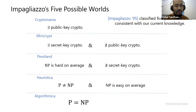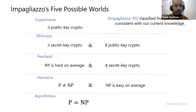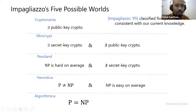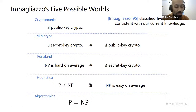There's a survey by Impagliazzo describing five possible worlds of complexity and cryptography, ranging from Algorithmica (where P equals NP) to Cryptomania (where there's public key cryptography). There are intermediate worlds: Heuristica (where P ≠ NP but NP is easy on average), Pessiland (where NP is hard on average but one-way functions don't exist), and Minicrypt (where one-way functions exist but public key cryptography doesn't). For Pessiland and Heuristica, one can ask: what exactly do you mean by 'on average' — in an errorless or error-prone sense?